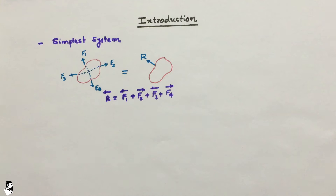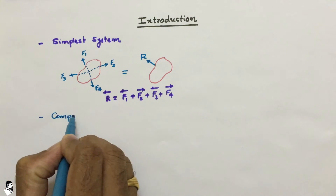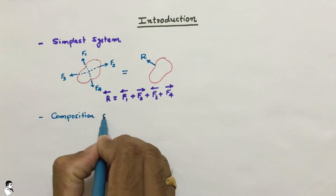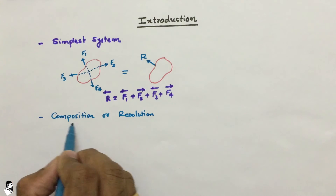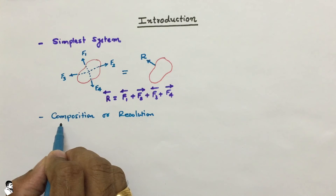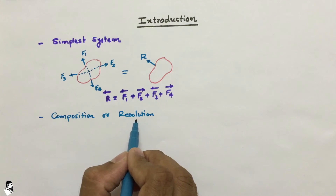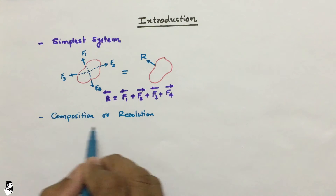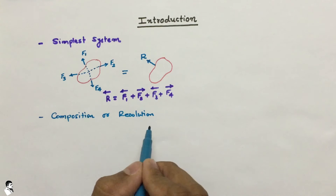The process to find out the resultant involves techniques of composition or resolution of forces. Composition means combining the forces together, and resolution means distributing or resolving the forces. These two terms — composition and resolution — will be covered in the next lecture of this series in very much detail.